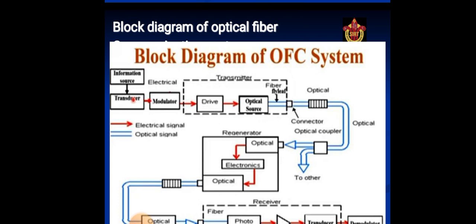Repeater can be used only for digital systems. In other words, they convert weak and distorted optical signal to electrical ones and then regenerate the original digital pulse train for further transmission.